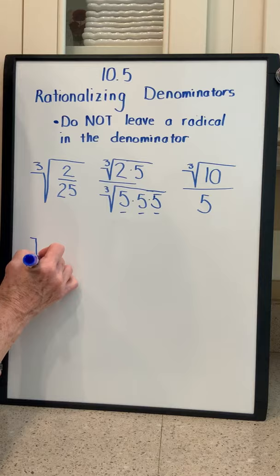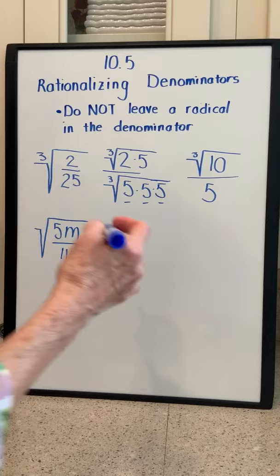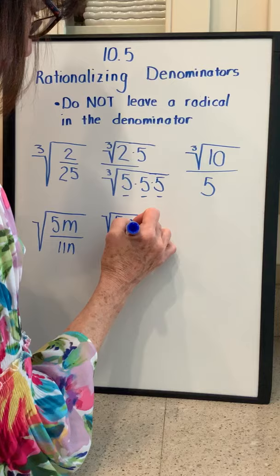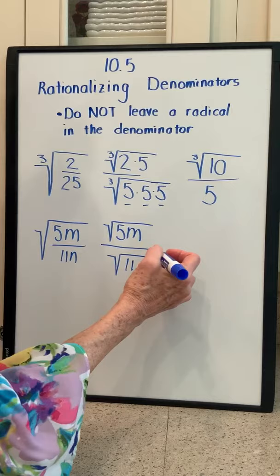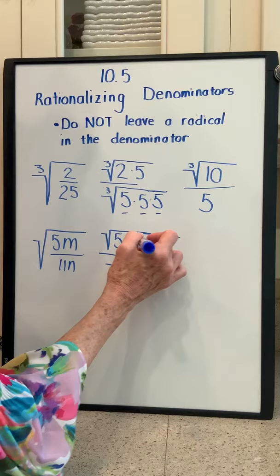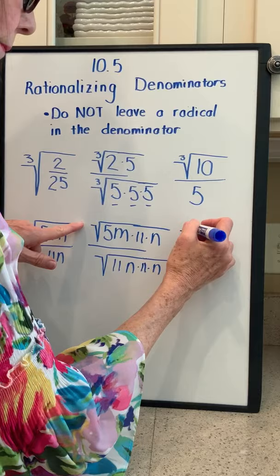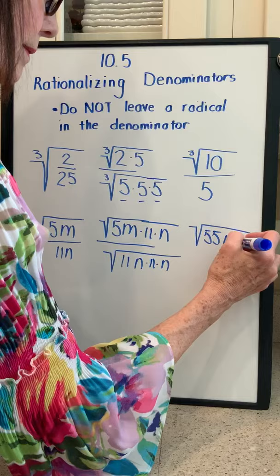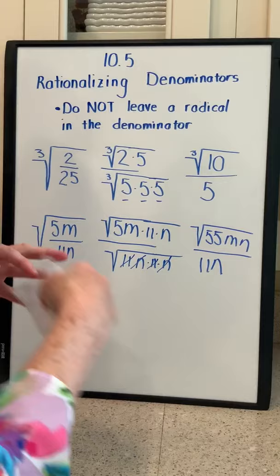We're going to have the square root of 5m over 11n. It's easier to break this apart as the square root of 5m over the square root of 11n. Because this is a square root with index 2, we need two 11s and two ns. So I need another 11 and another n in the denominator, and I have to do the same in the numerator. Multiplying across: 5 times 11 is 55mn under the radical sign in the numerator, and we can take the 11s and the ns out of the denominator radical, giving us over 11n.